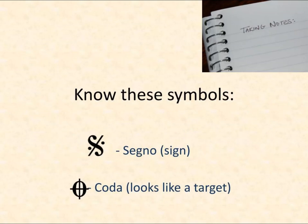Here we see the symbol for the Segno, which is just a sign — it's kind of like a funky crooked S with a percent sign over top of it. Whenever we see that, it means that at some point you're going to come back to this spot in your music. Take a mental note and be ready to skip back here.